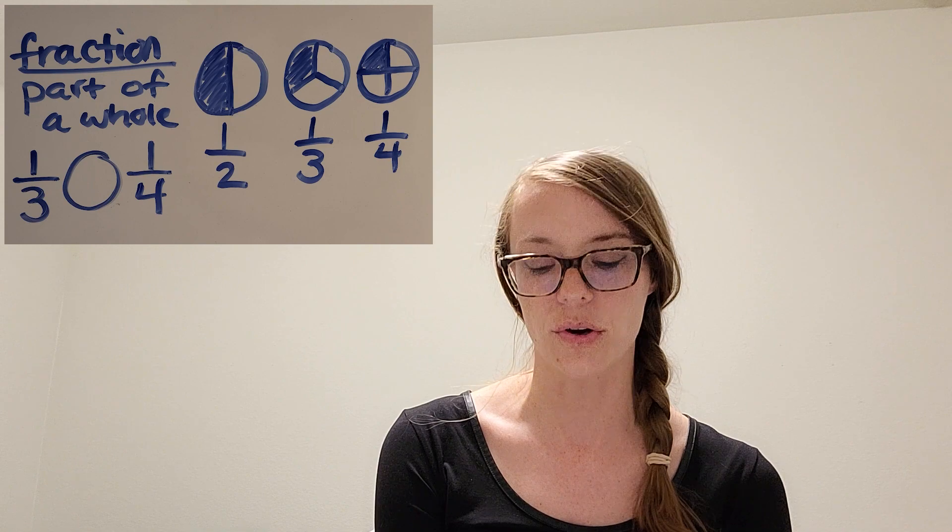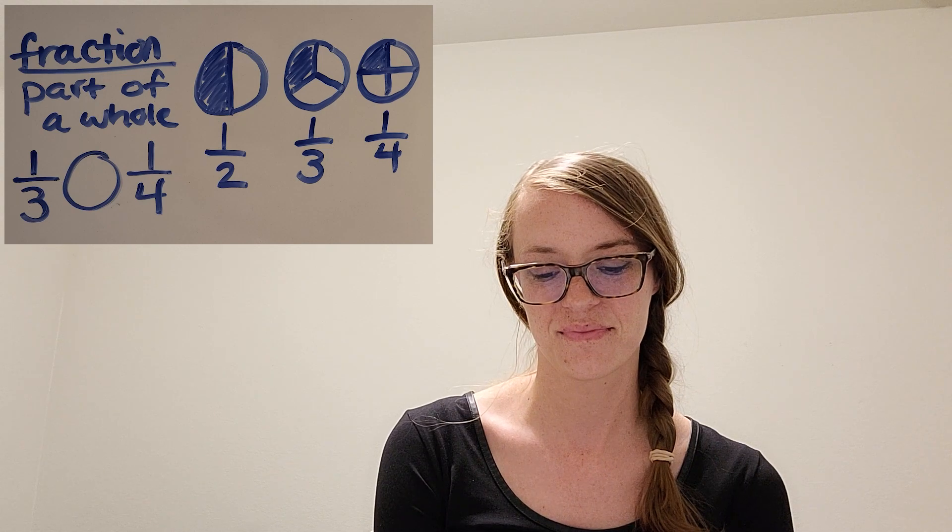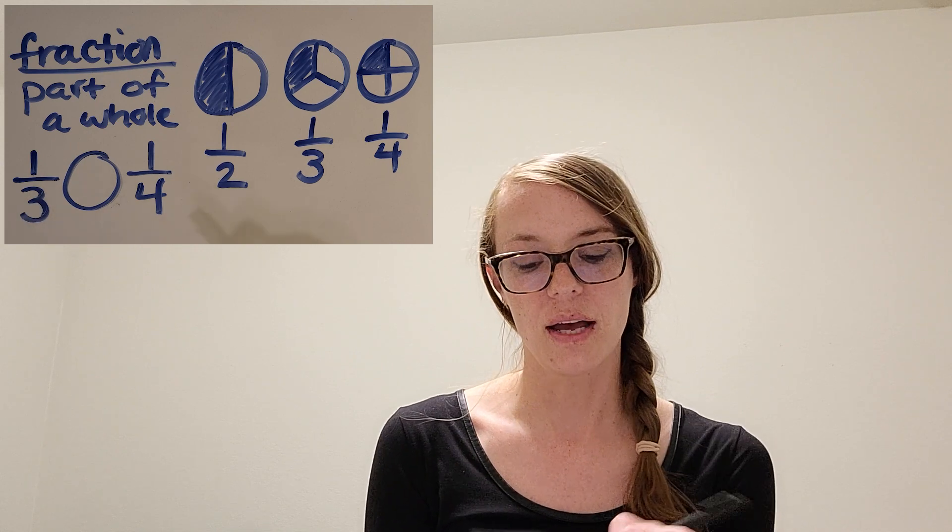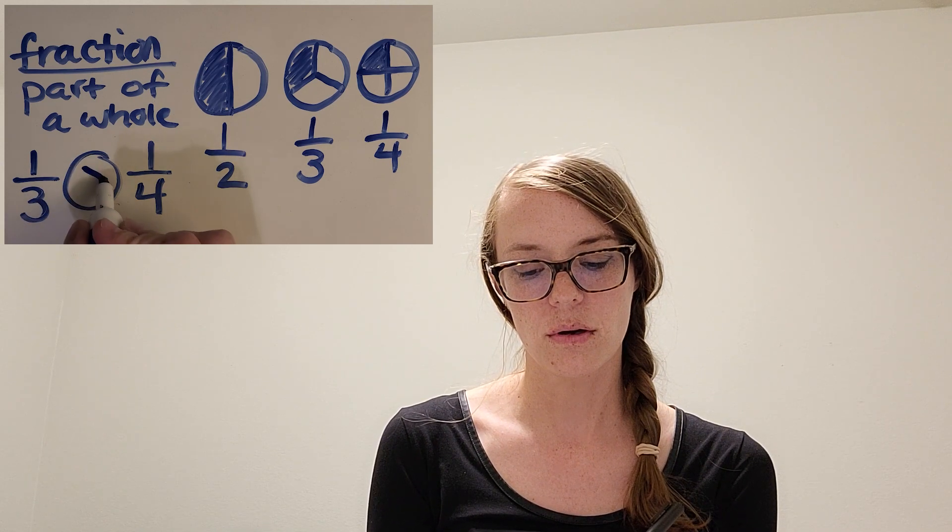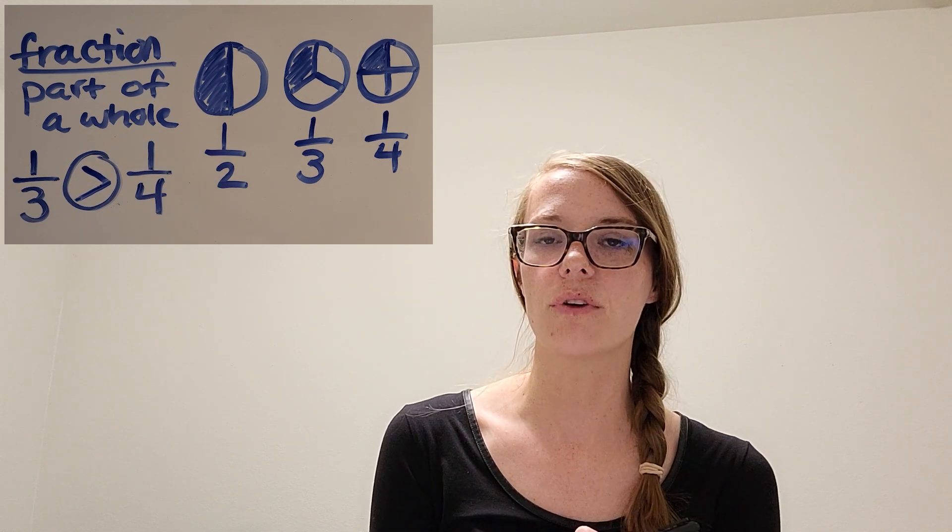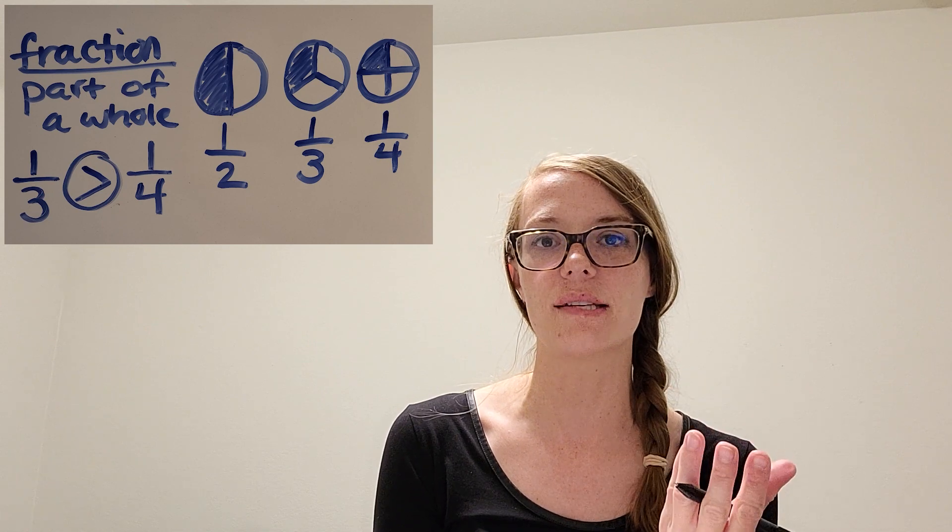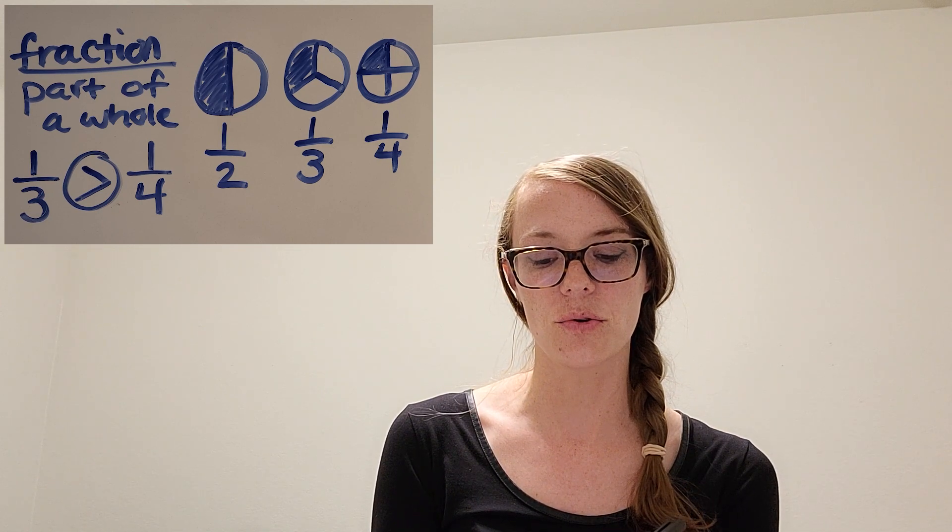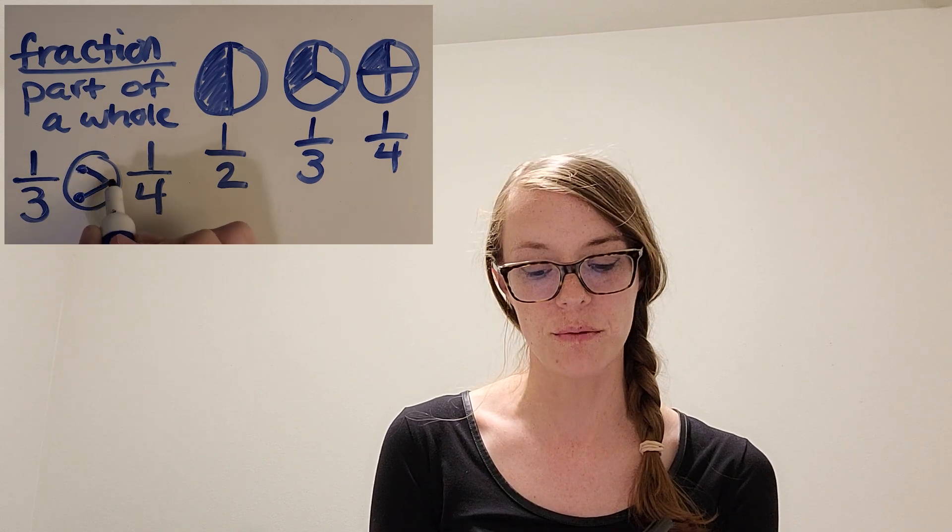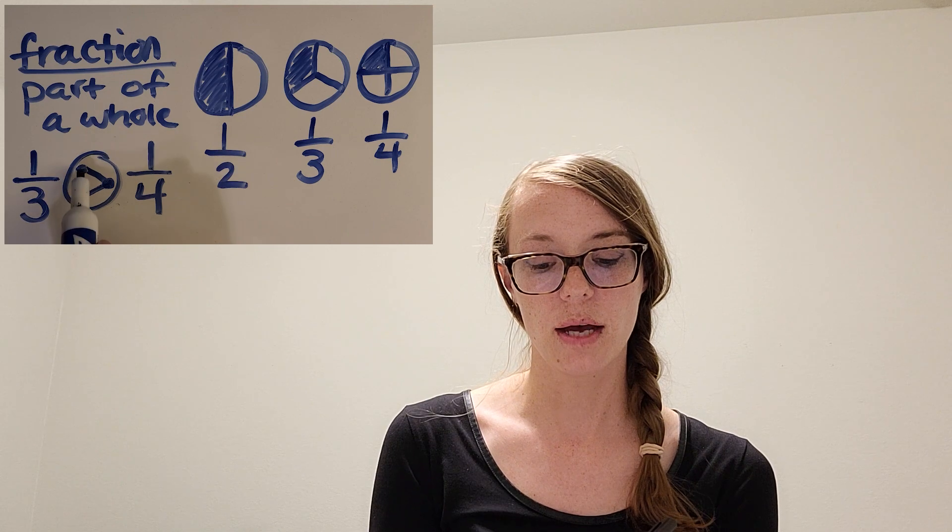So I put one-third on one side and one-fourth, and then my circle in the middle is just a comparison circle that we're going to draw a symbol inside of. So what do you think? Which is larger, one-third or one-fourth? Look up at that picture to understand too. Okay, you got it. One-third is greater. And so I'm going to draw my symbol going this way. I've got a couple of suggestions for you for understanding which way to make your greater than or less than symbol.